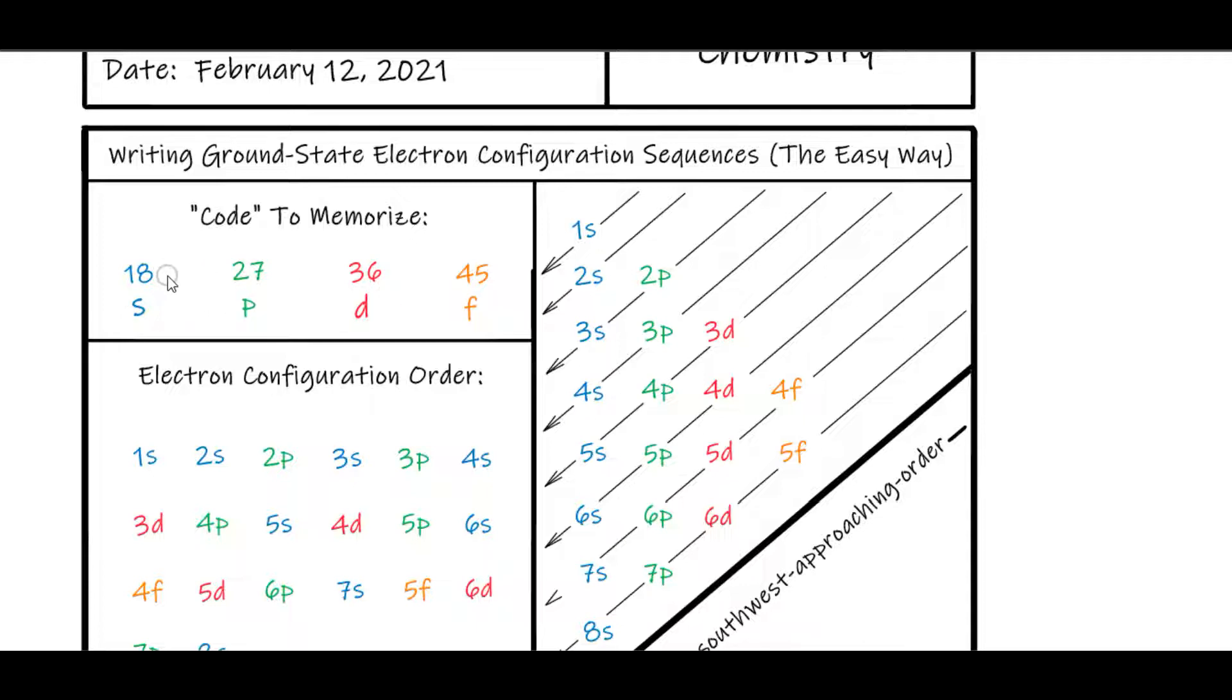That's how I memorize the order. So if you're asked what is the orbital order for writing ground state electron configuration sequences, S, P, D, F. And then all you need to do is memorize 18, 27, 36, 45. And here's why.